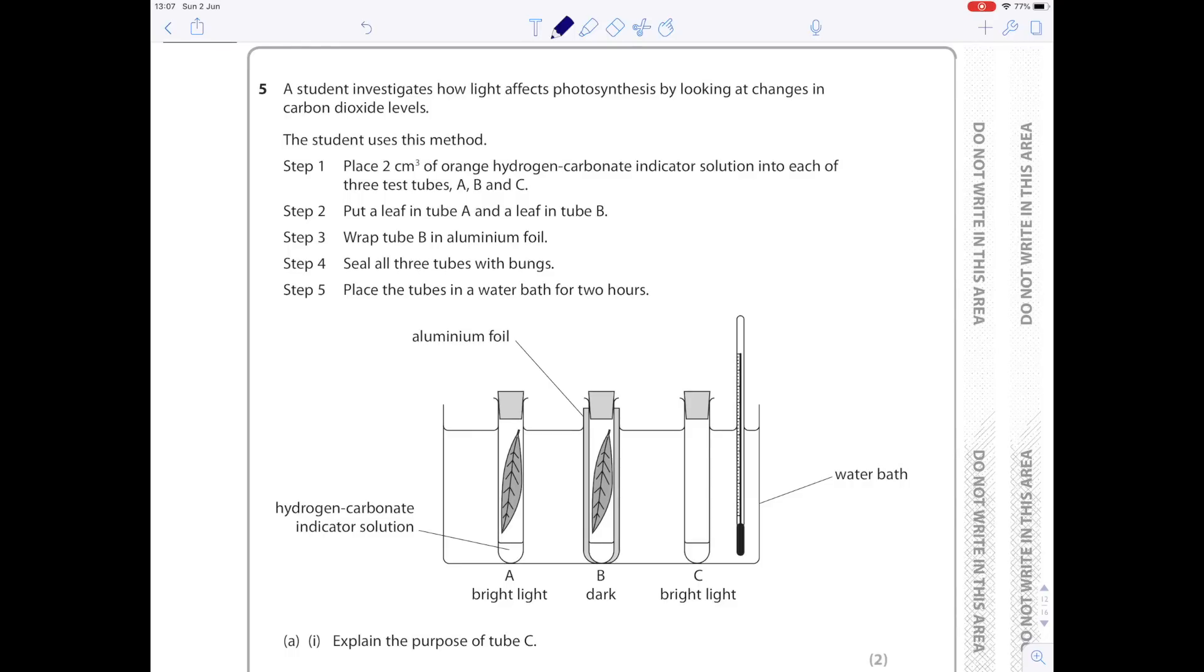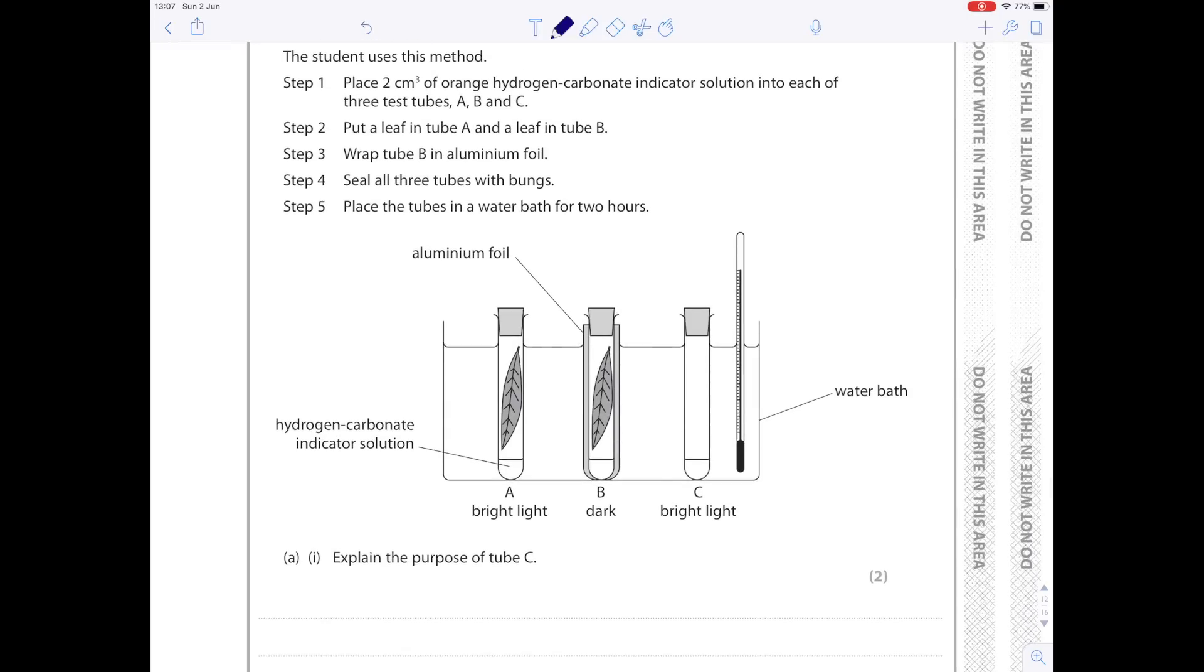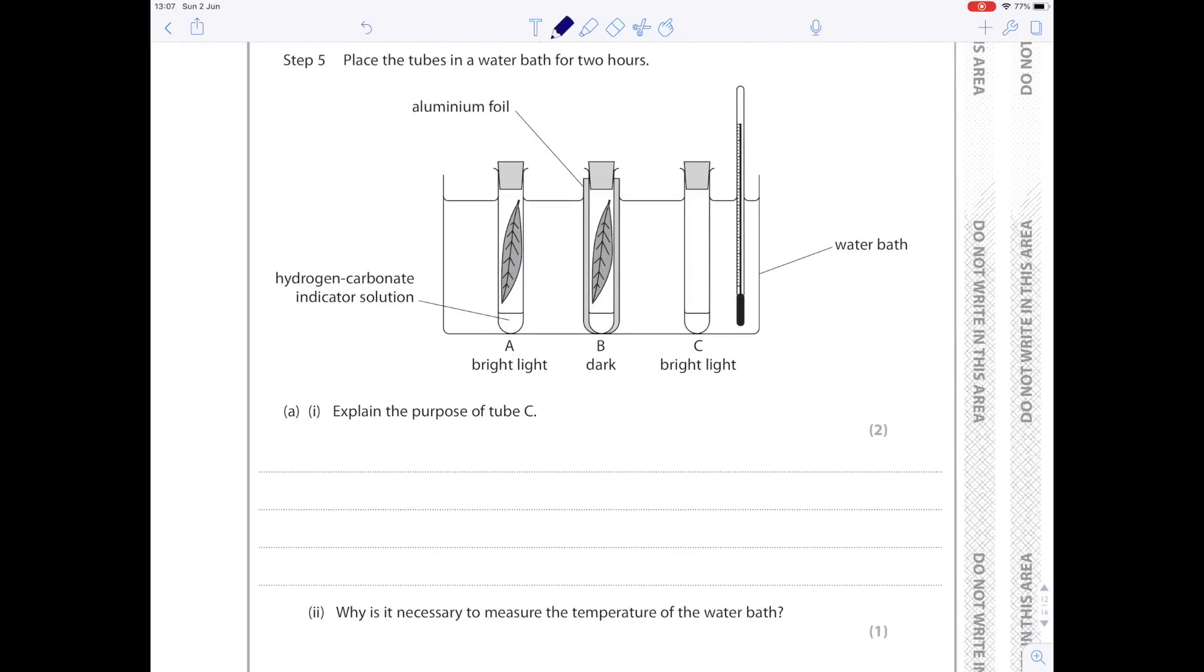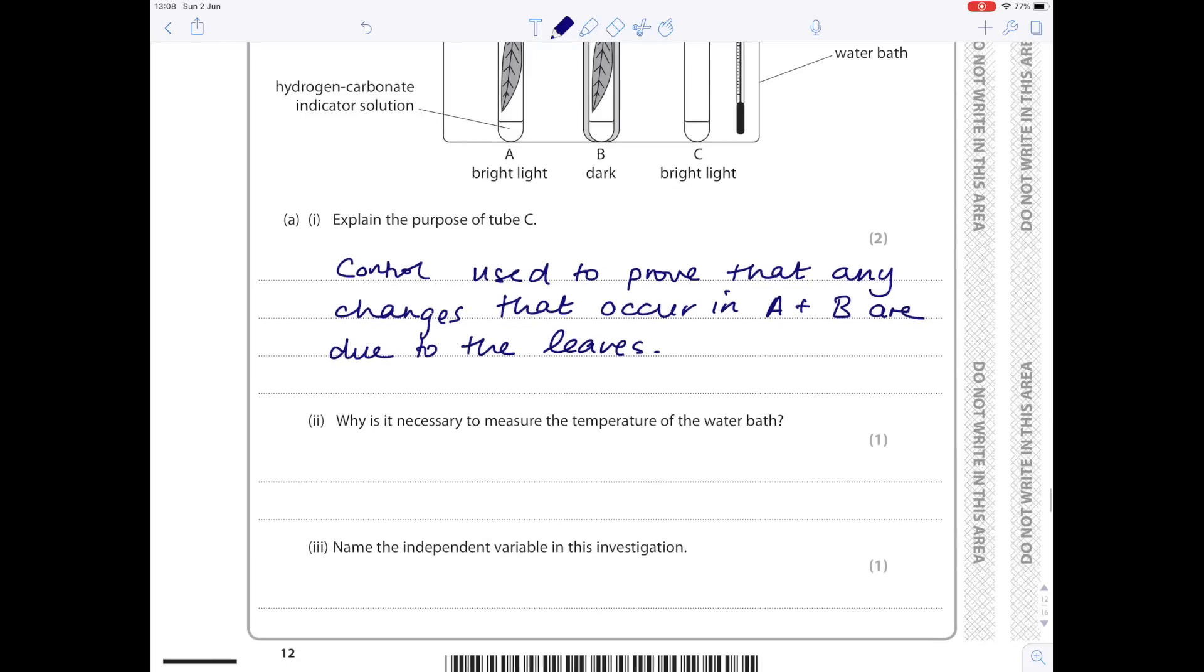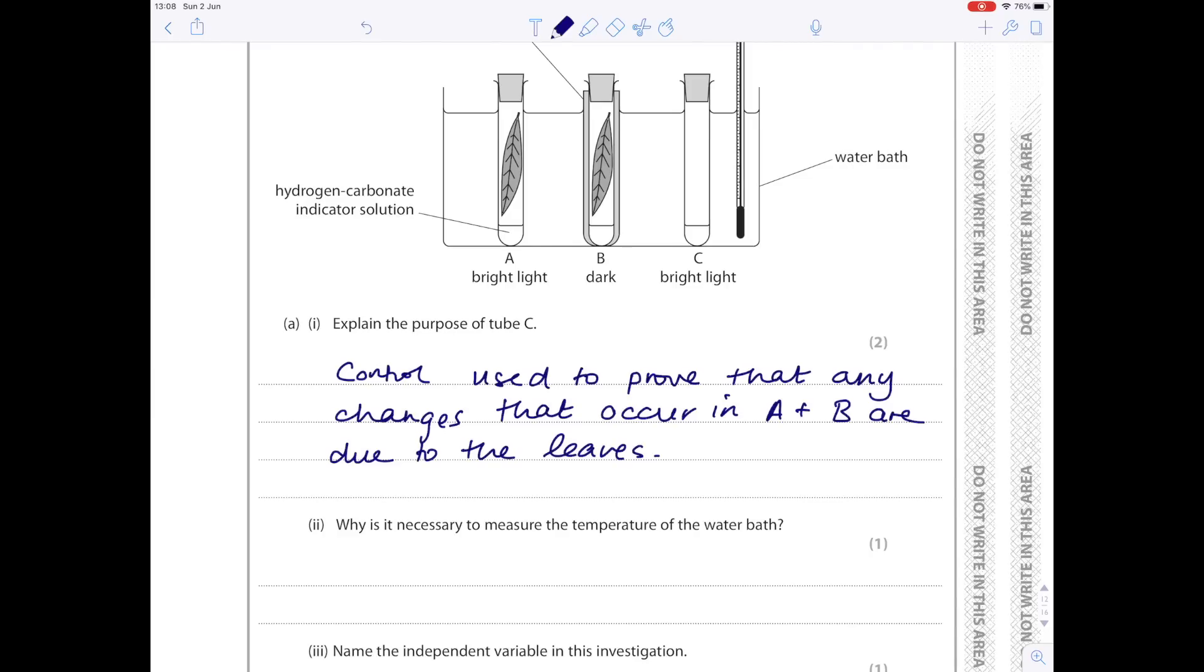Five. A student investigates how light affects photosynthesis by looking at changes in carbon dioxide levels. The student uses this method: Place two centimeters cubed of orange hydrogen carbonate indicator solution in each of three test tubes, A, B and C. Put a leaf in tube A and a leaf in tube B. Wrap tube B in aluminum foil. Seal all three tubes with bungs and place the tubes in a water bath for two hours. Explain the purpose of tube C. It contains no leaf, so it's acting as a control used to prove that any changes that occur in A and B are due to the presence of a leaf. Why is it necessary to measure the temperature of the water bath? Remember, the real reason we use a water bath is to control the temperature and keep it constant. So we're going to measure the temperature to make sure that the water bath is functioning correctly.